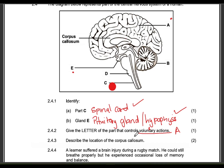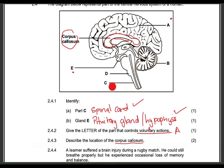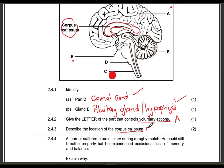Describe the location of the corpus callosum. They are asking you to describe the location — so that is between the hemispheres of the cerebrum. That is the location, not the function — between the hemispheres of the cerebrum — two marks.